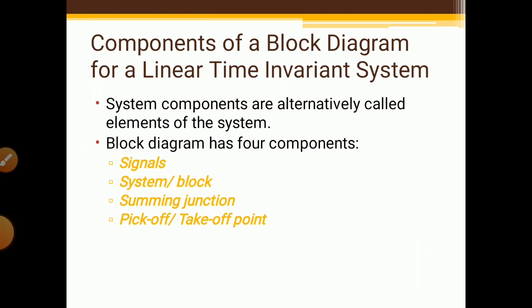Now the components of a block diagram for a linear time-invariant system. System components are alternately called elements of the system. A block diagram has four components: first, signals; second, system or block; third, summing point or summing junction; and last, pick-up, pick-off, or take-off points. These points are very important when solving complicated problems.